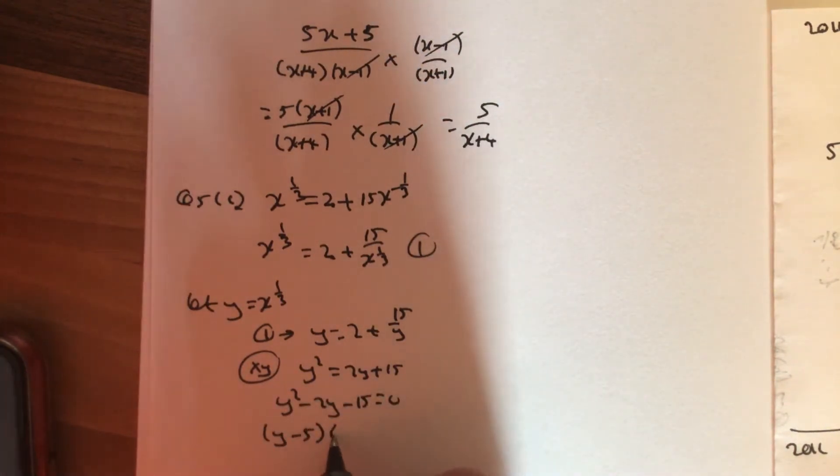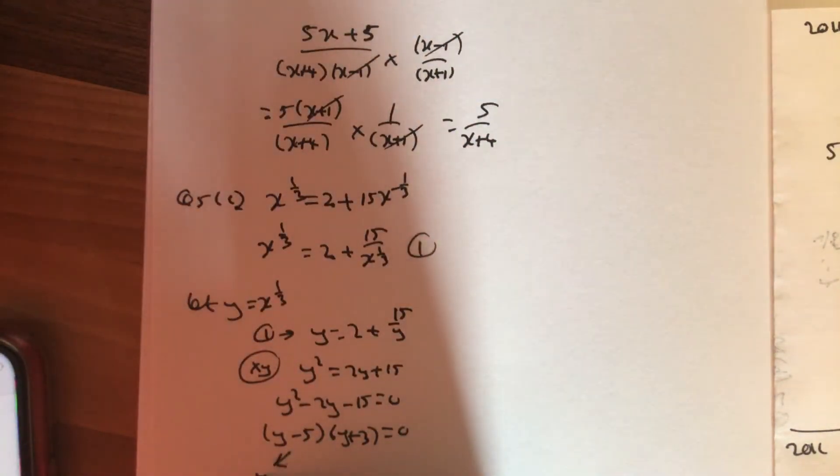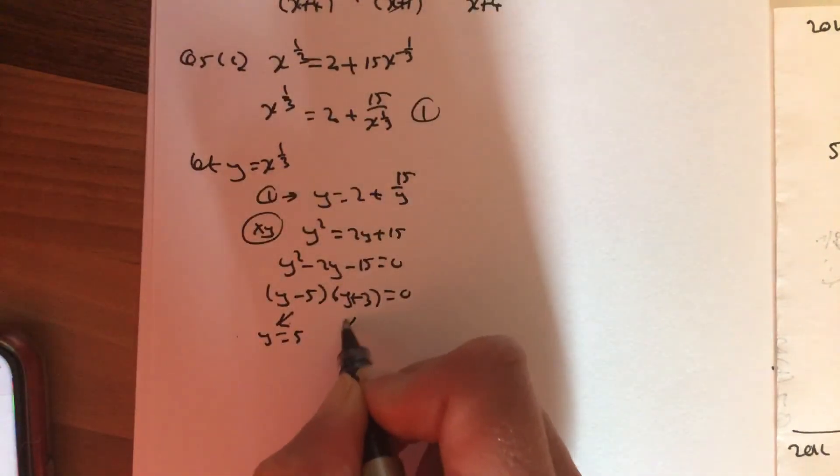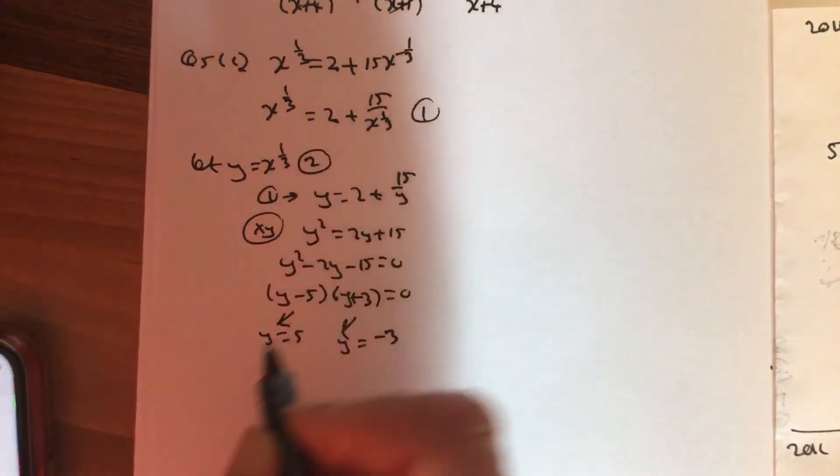Put everything on one side for a quadratic. Factorize it and solve. So y equals 5, y equals minus 3. Now, call this equation 2.